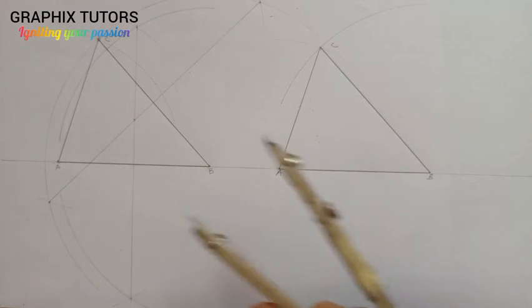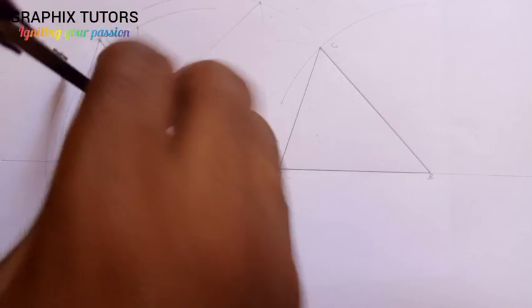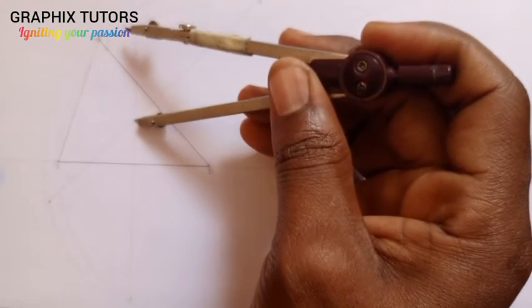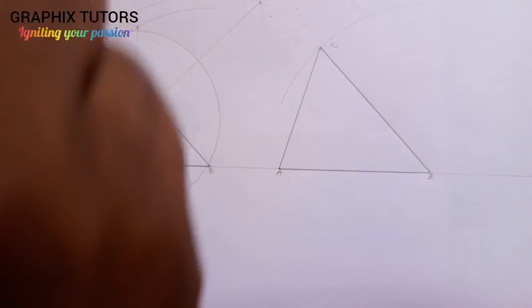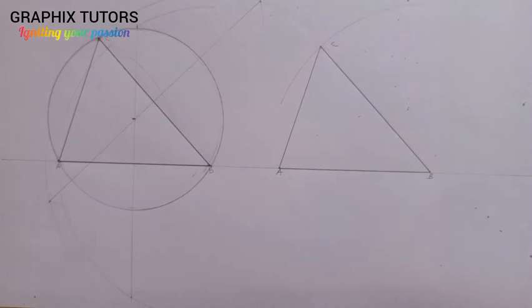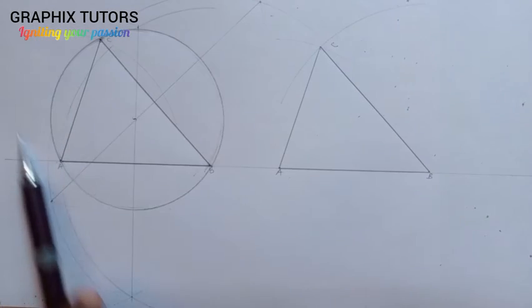Now I take my compass and place it at the intersection point of the two bisectors, using the distance to the highest point C as the radius, and start drawing the circumscribing circle. The three points A, B, and C will all be touching the circumference of this circle.